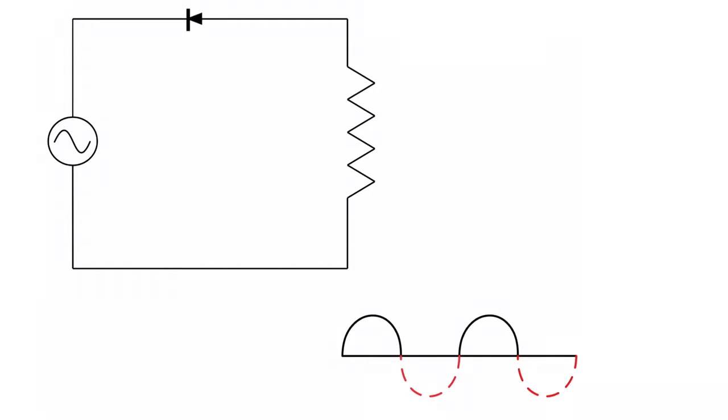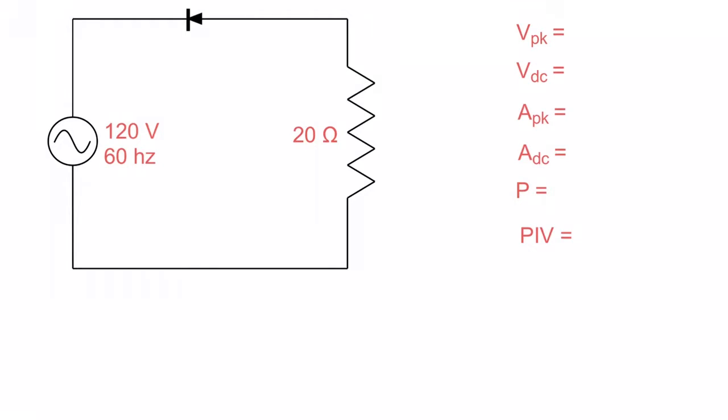I'm going to throw some numbers at the circuit, and we're going to go through the calculations, because I find that can be a bit tricky for some. So let's move on and throw some numbers at this. We're going to start out with a very simple circuit. We have 120 volts, 60 hertz, and I've given it 20 ohms of resistance.